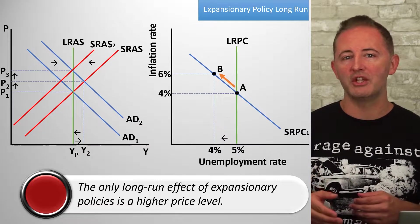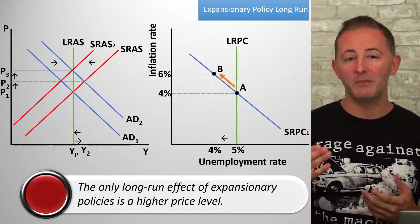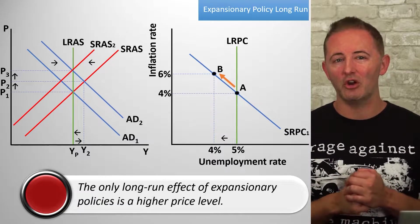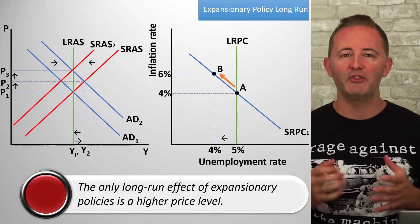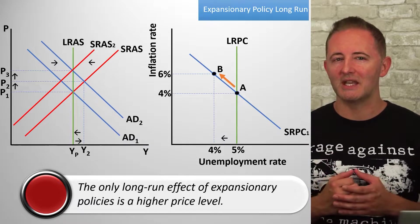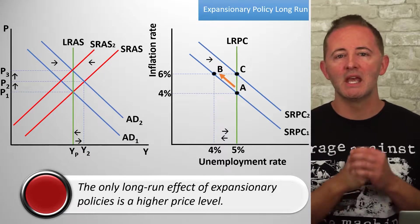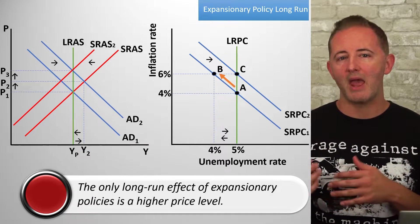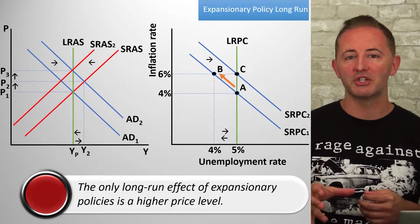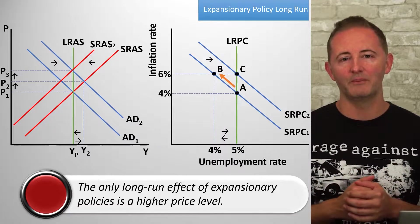At point B, actual inflation is higher than expected inflation. Eventually, people — including workers and firms — will expect higher inflation, and in turn, nominal wages will rise, shifting the SRAS left. On the Phillips curve, we say that inflationary expectations shift the SRPC. An increase in inflationary expectations shifts the SRPC right, and we arrive at point C, back in long-run equilibrium, where actual inflation equals expected inflation — just like the AD-AS model.